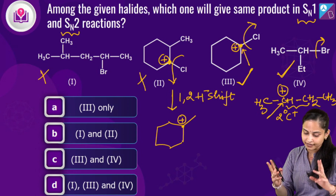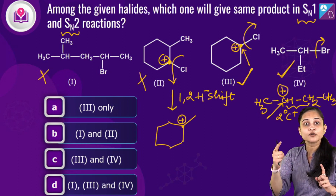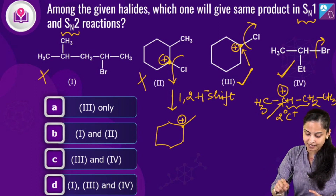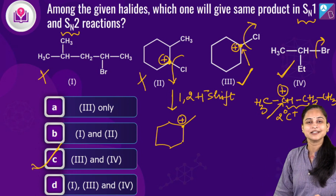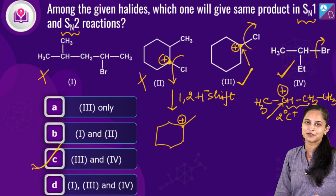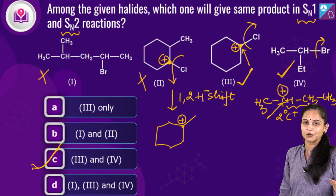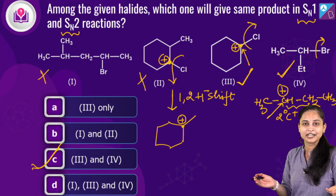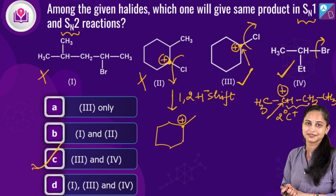So options 3 and 4 are the alkyl halides that give the same product in both SN1 and SN2 reactions, making option C the correct answer. Hopefully your doubts regarding SN1 and SN2 reactions are now cleared.